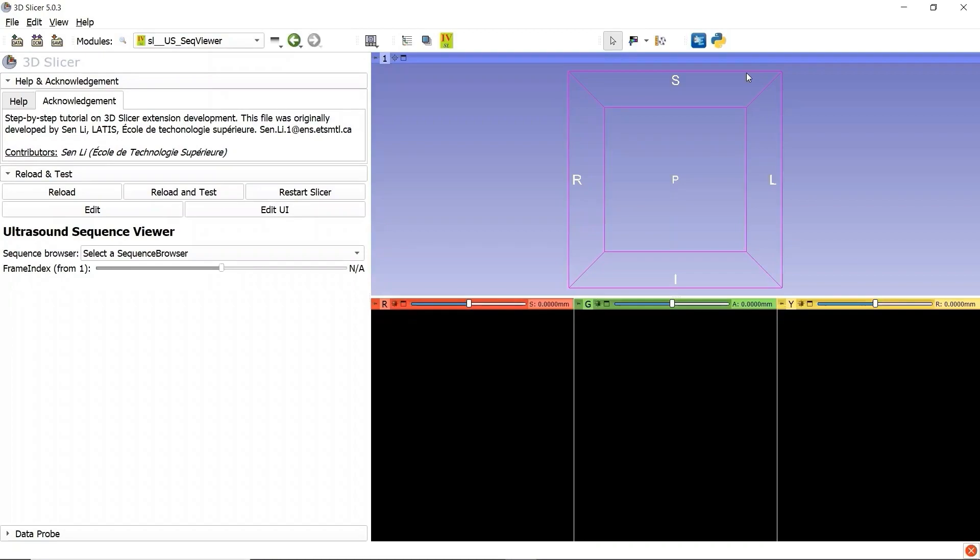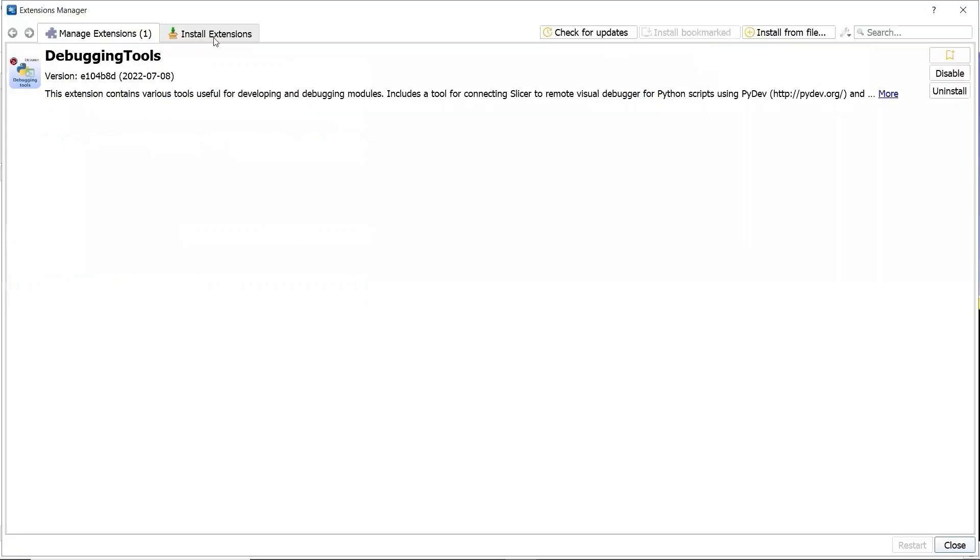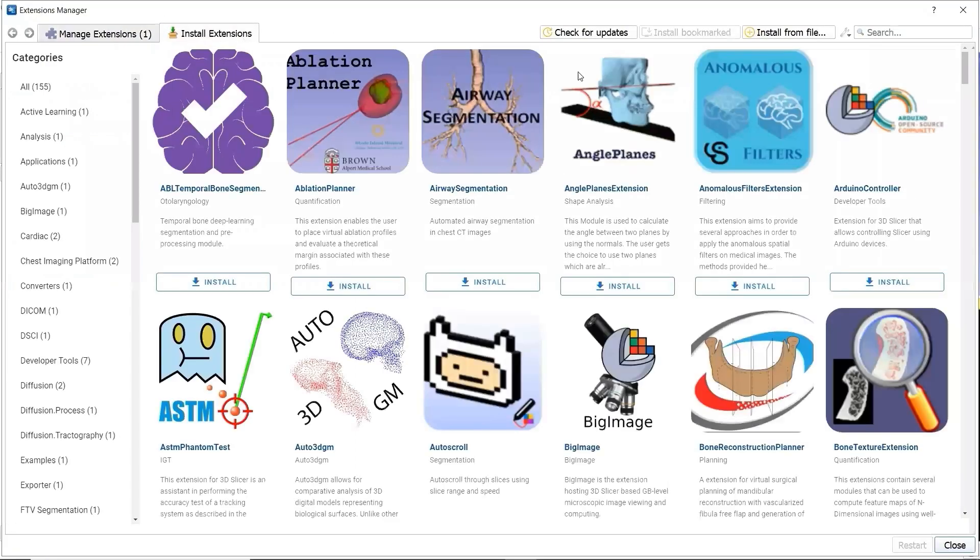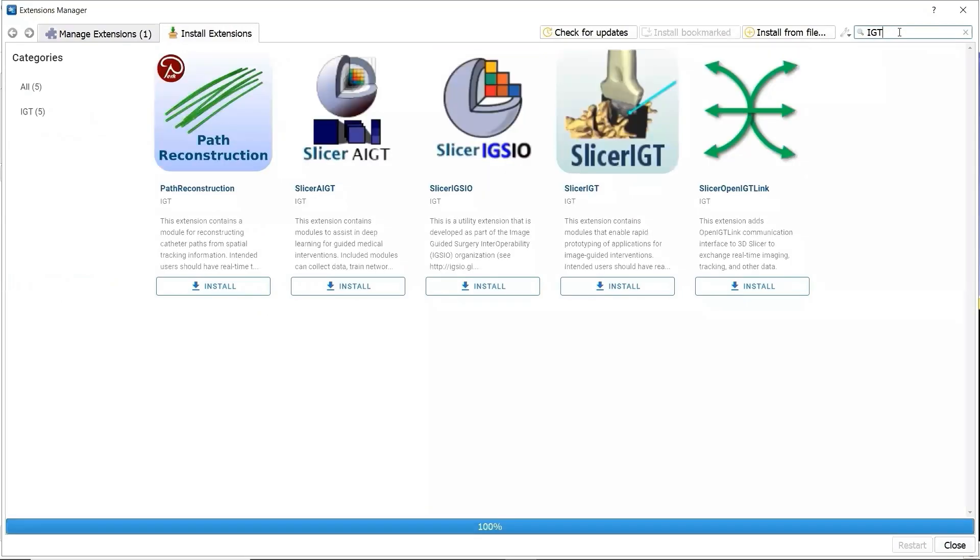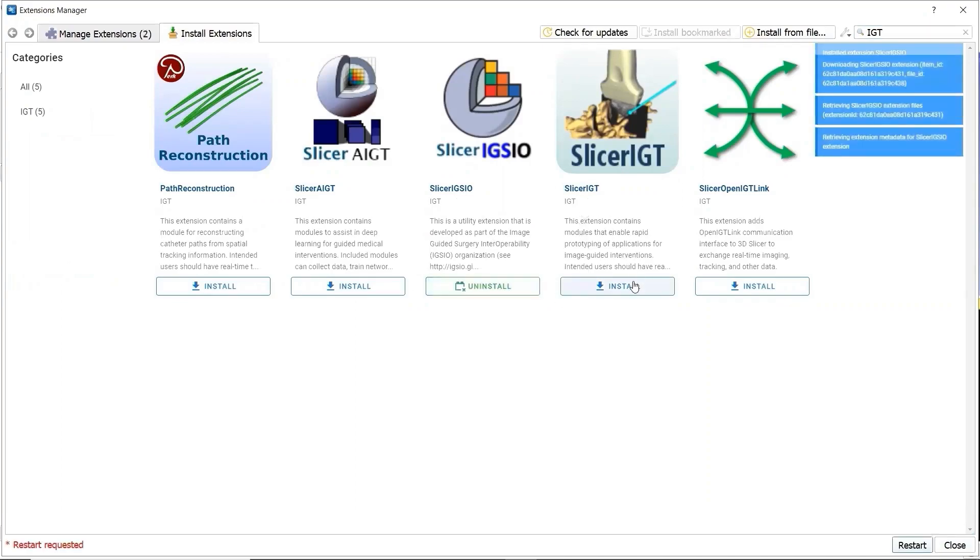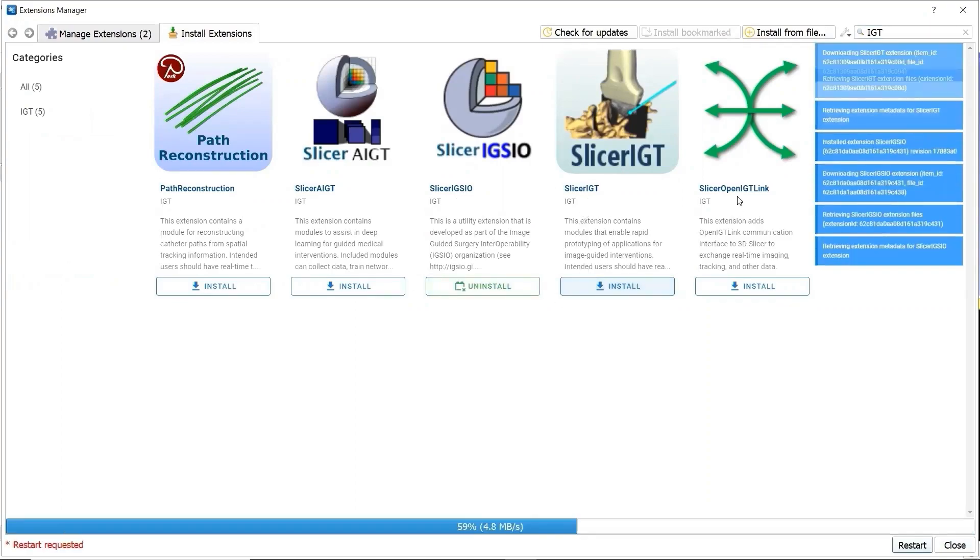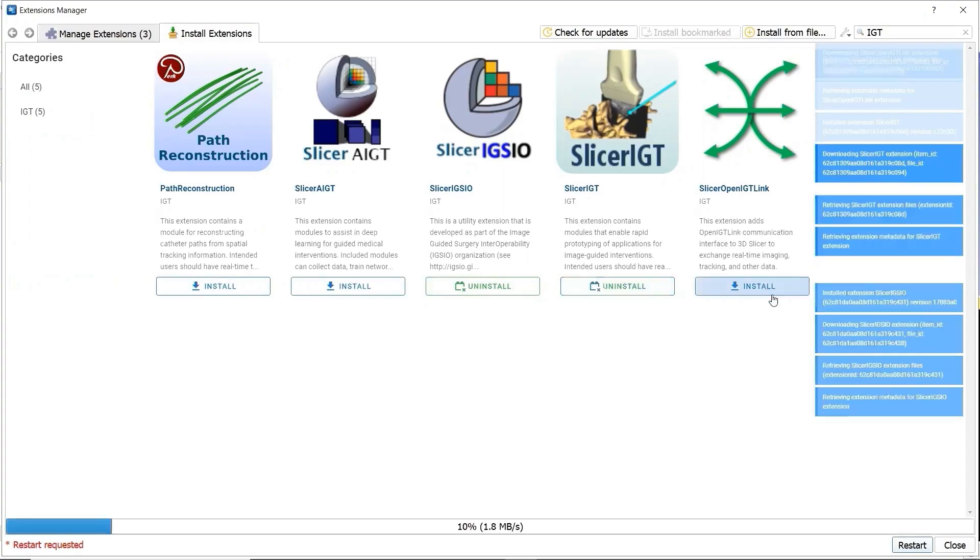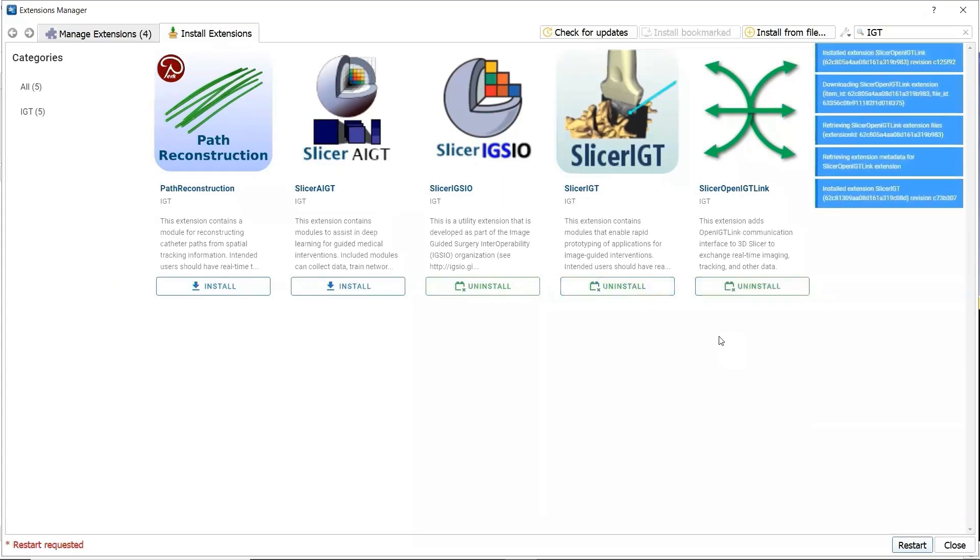In order to correctly load the ultrasound sequence files, we first need to install 3 Slicer Extensions about image guidance. Let's go to the Extensions Manager. In the tab Install Extensions, we search for the keyword IGT. The extension Slicer IGSIO, Slicer IGT, Slicer IGT link are the 3 extensions we have to install.